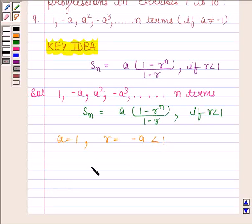So, S_N is equal to 1 times (1 minus (-A) to the power N) divided by (1 minus (-A)).